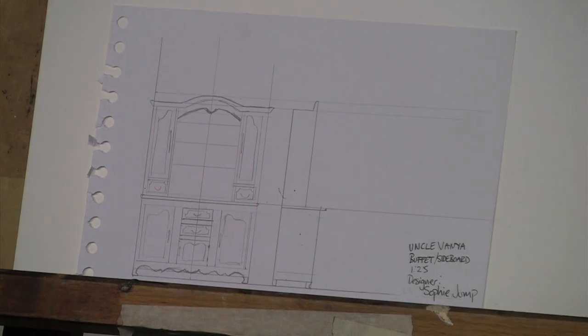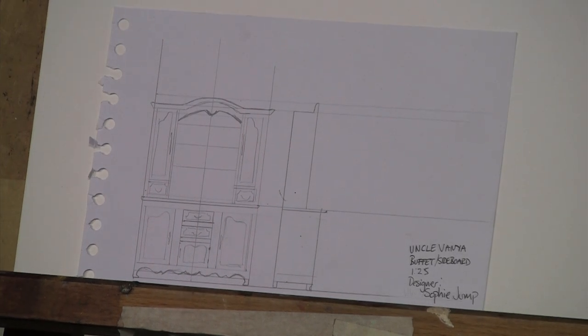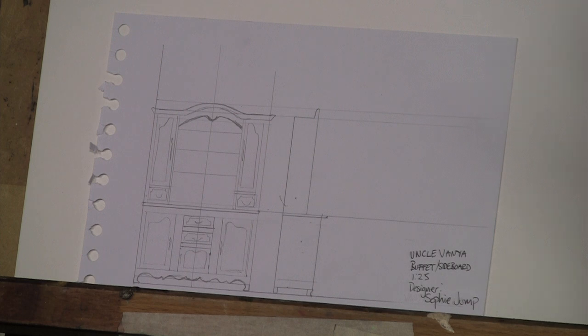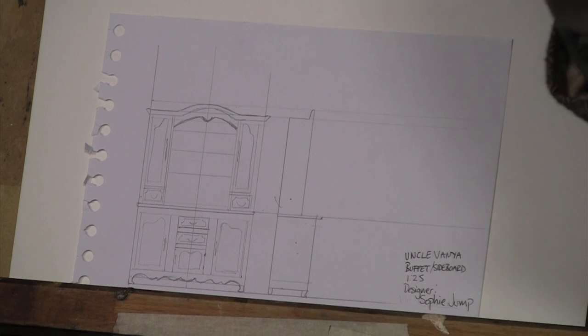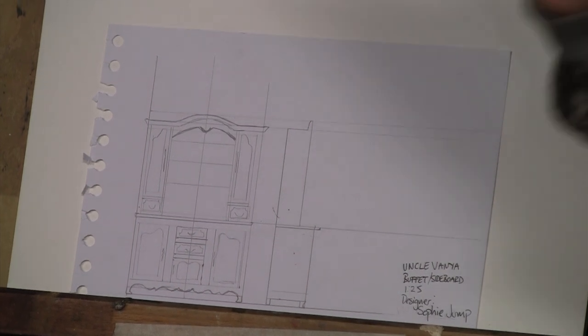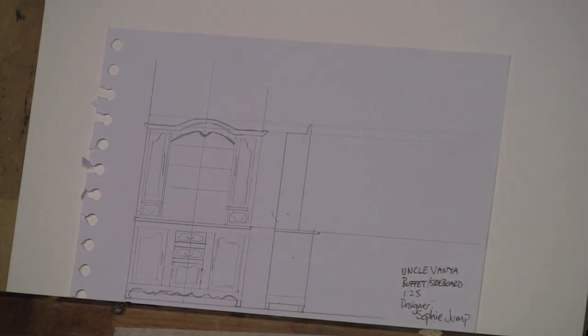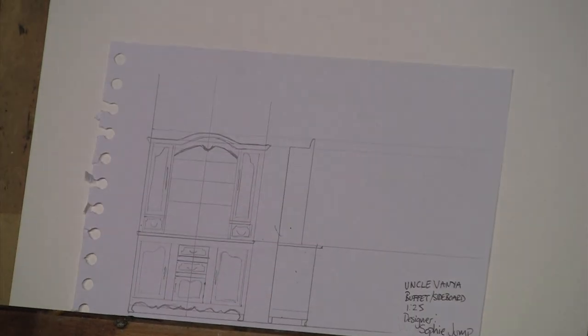This is a drawing of a sideboard that we wanted in the actual production. I have to draw it up that size and then make a model of it, or make a model and then draw it up, and then somebody either makes it or finds something like that.